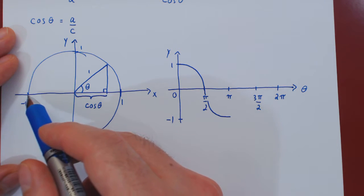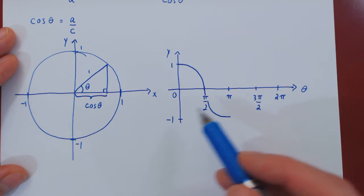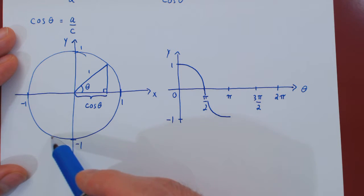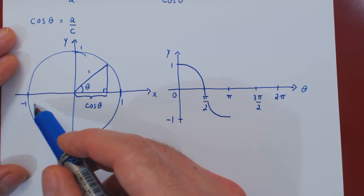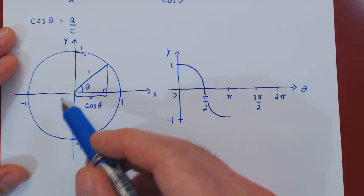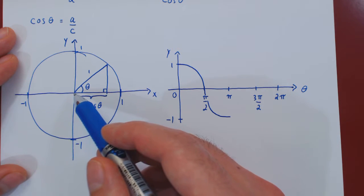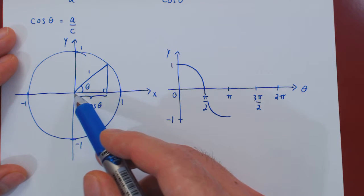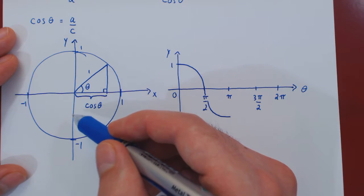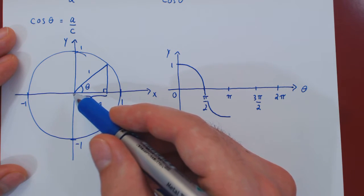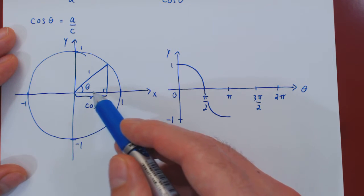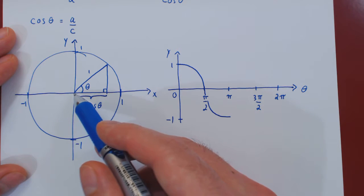As we go from π to 3π/2, the hypotenuse sweeps from the left all the way to the bottom. Picking a point along the way, the base becomes a little less negative, and even less negative further along. The base goes from negative 1 all the way up toward 0, because once we reach 3π/2, we again lose our triangle for a vertical line segment with no width — so cosine is once again 0, increasing from negative 1 up to 0.